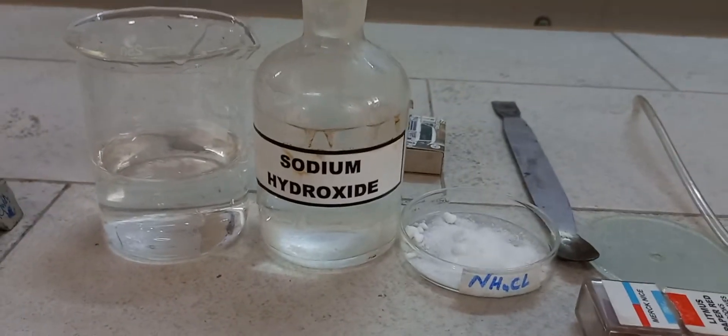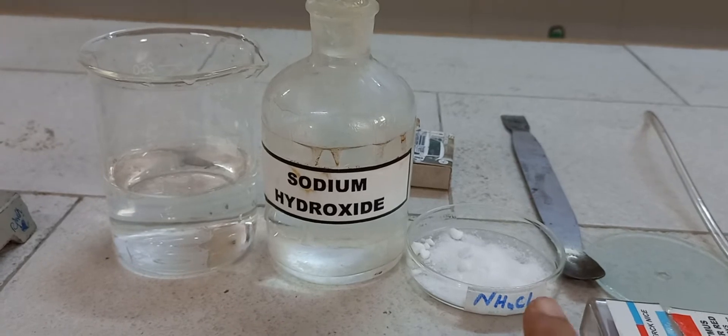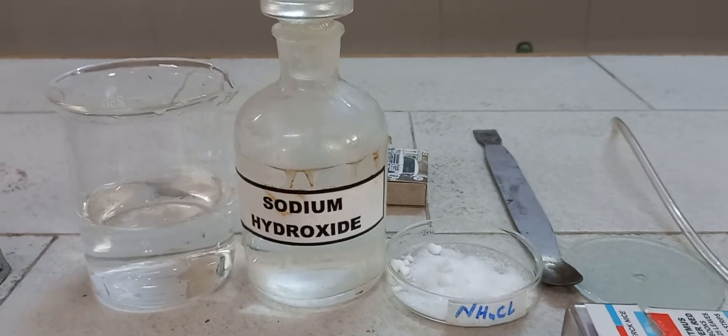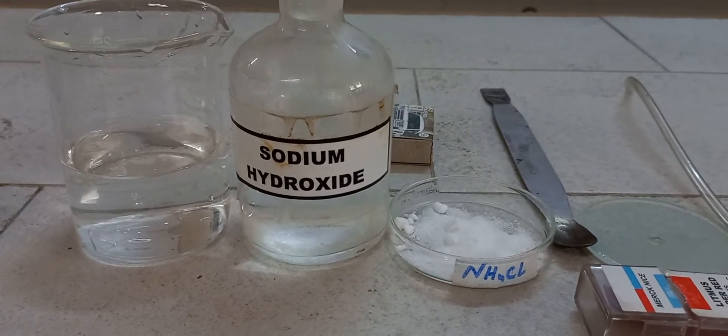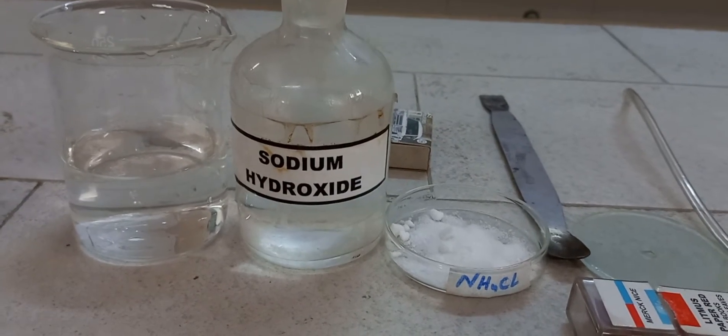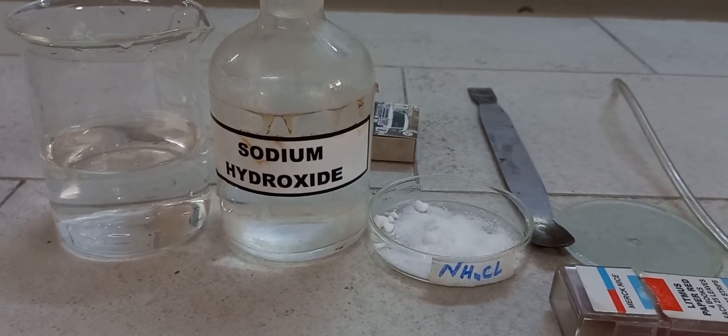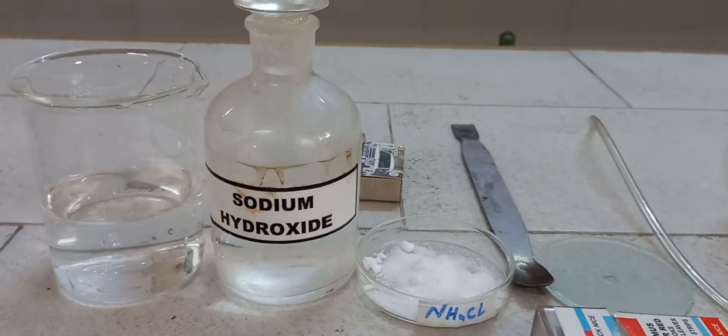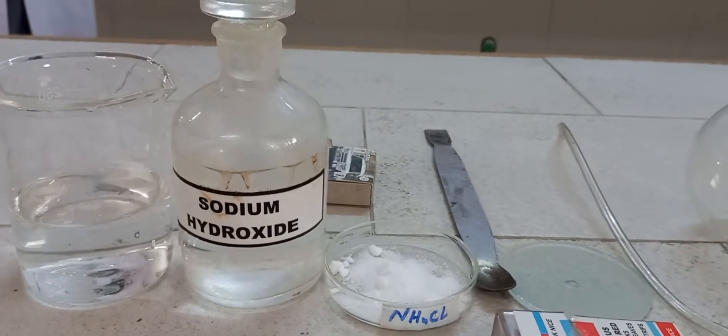For the preparation we have sodium hydroxide as a chemical. When we add sodium hydroxide to any ammonium salt, here we have ammonium chloride, they liberate ammonia gas. So the alkali we have is sodium hydroxide and the ammonium salt we are taking is ammonium chloride. When we mix them together and slightly warm them, we will be getting the ammonia gas.